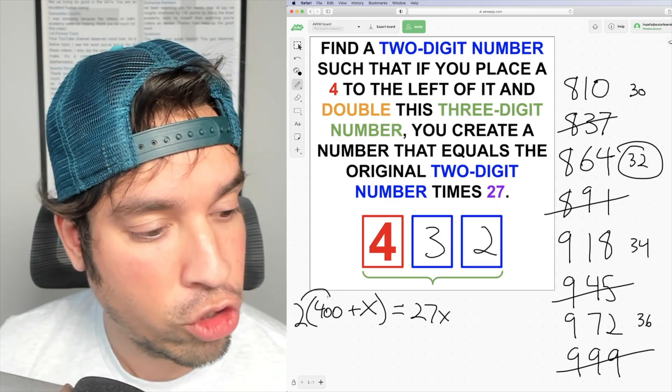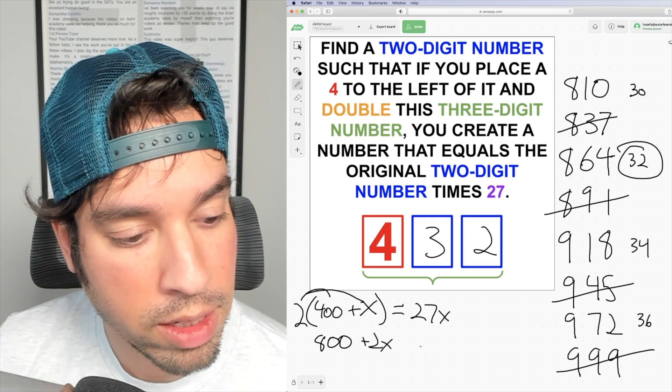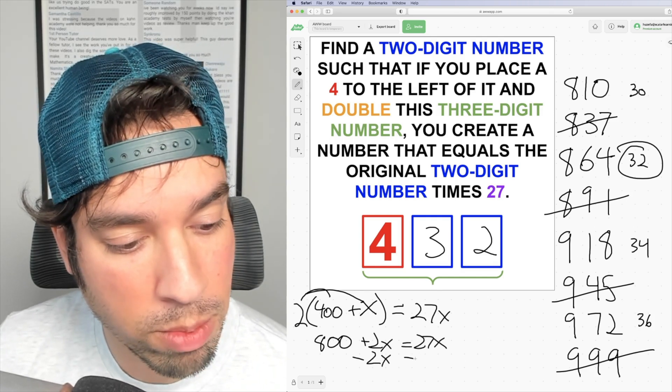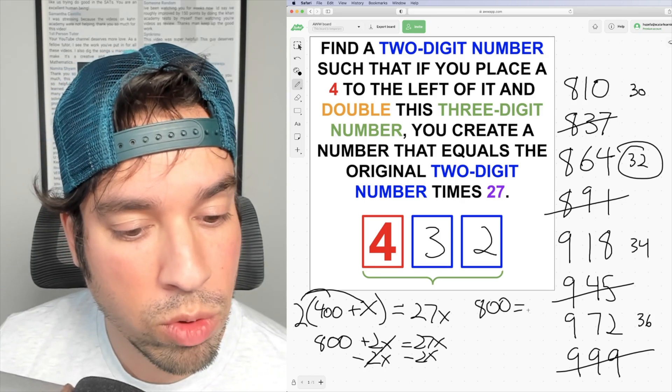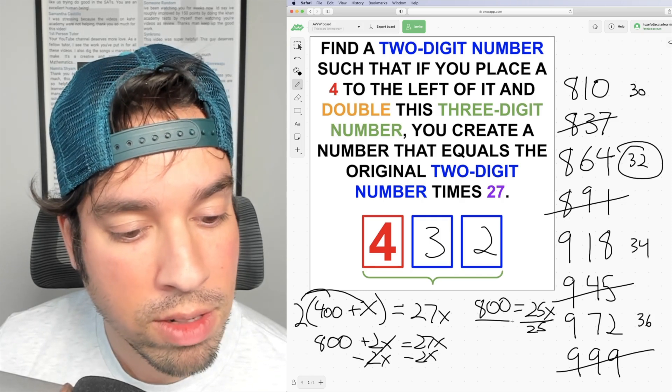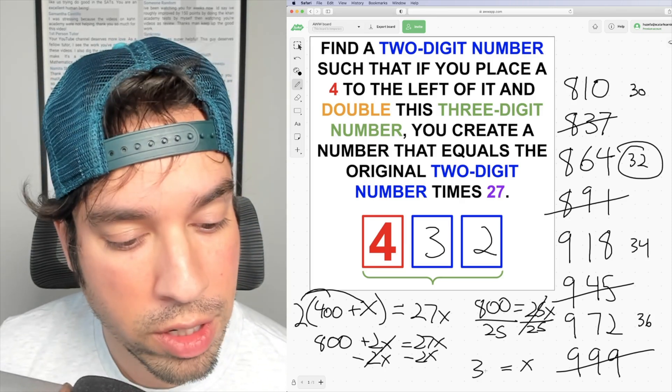If I solve this, I distribute the 2 and I get 800 plus 2x equals 27x. Subtract 2x from both sides and I get 800 equals 25x. Divide by 25, divide by 25, x of course equals 32.